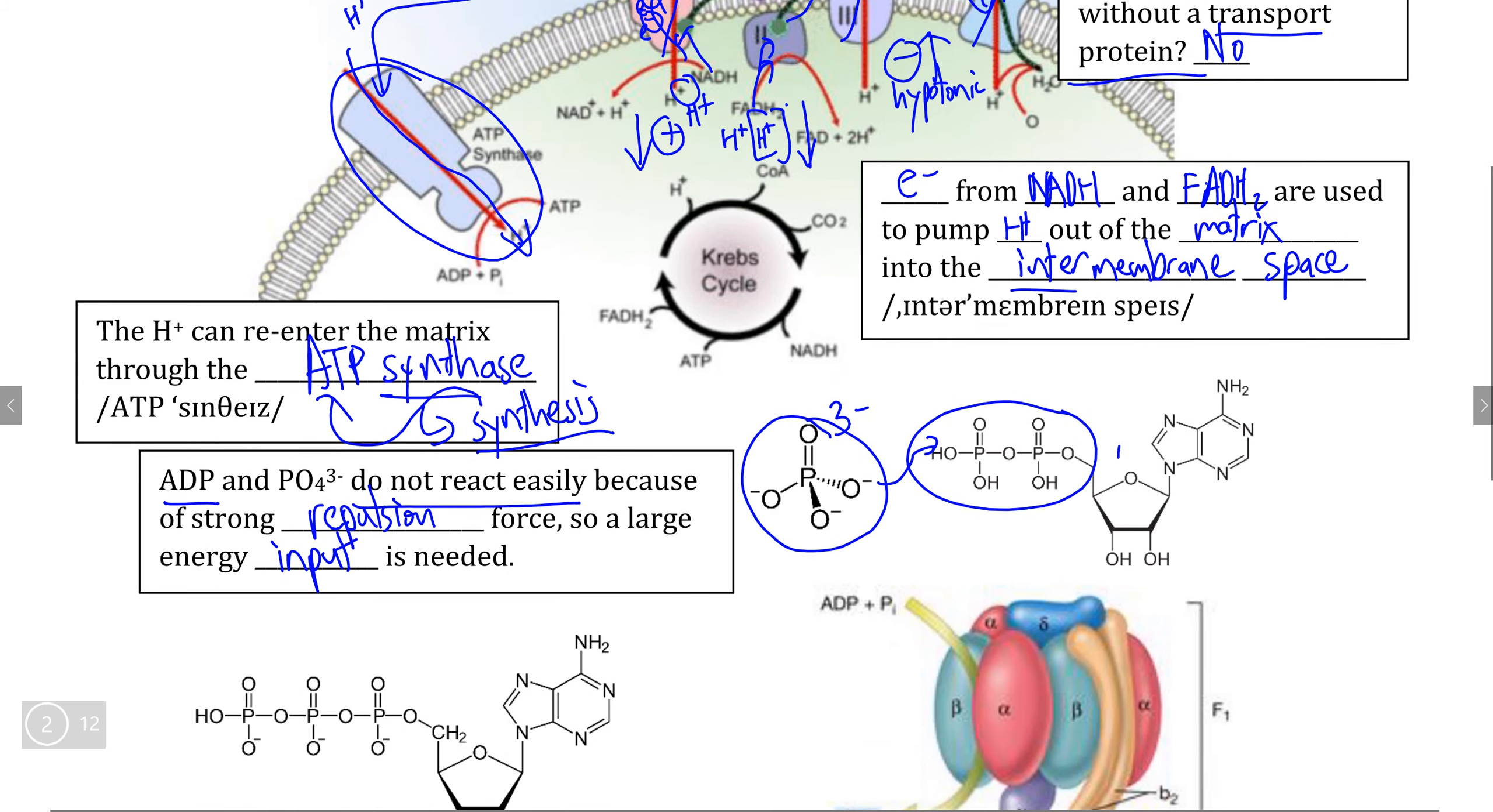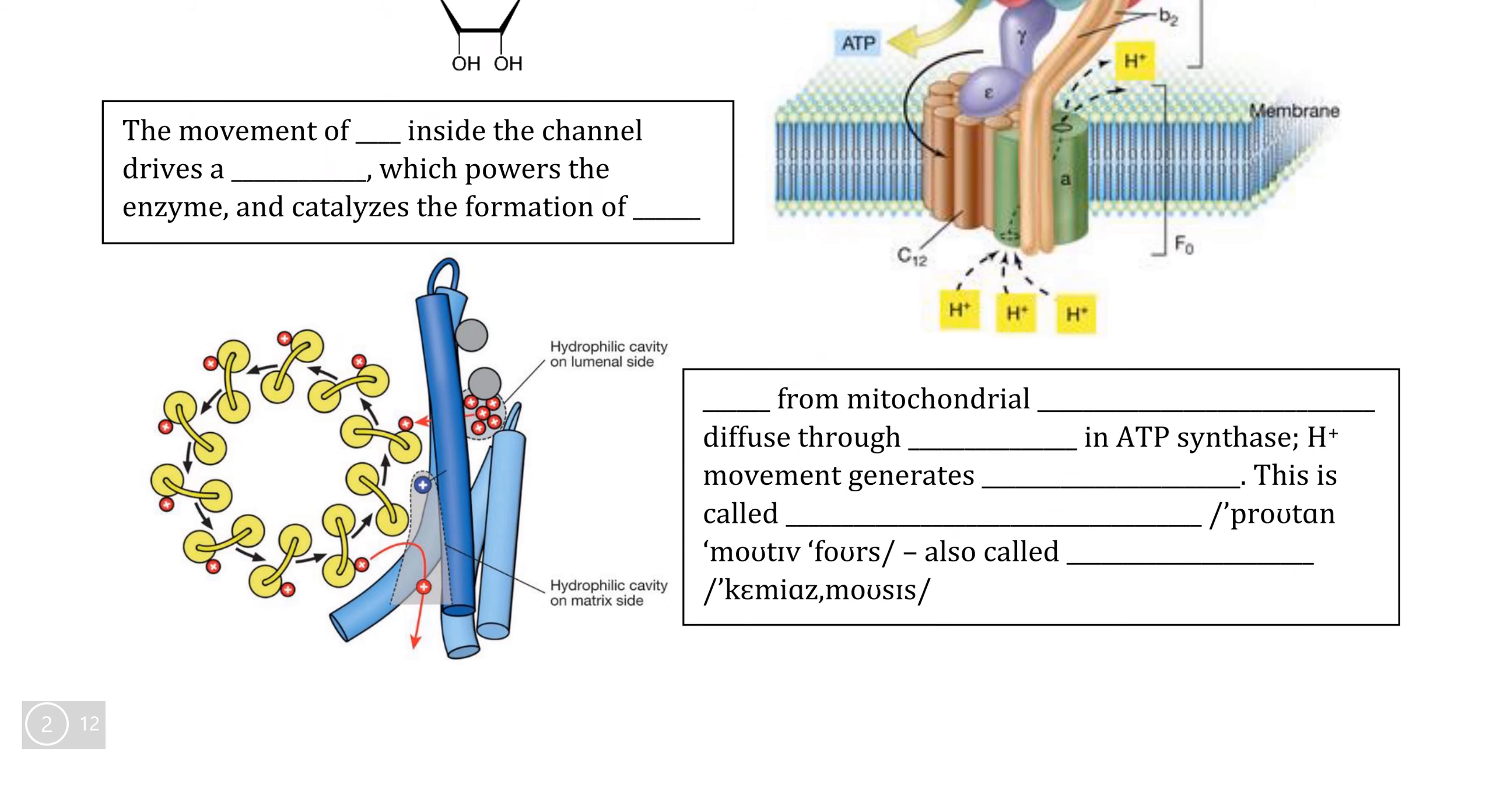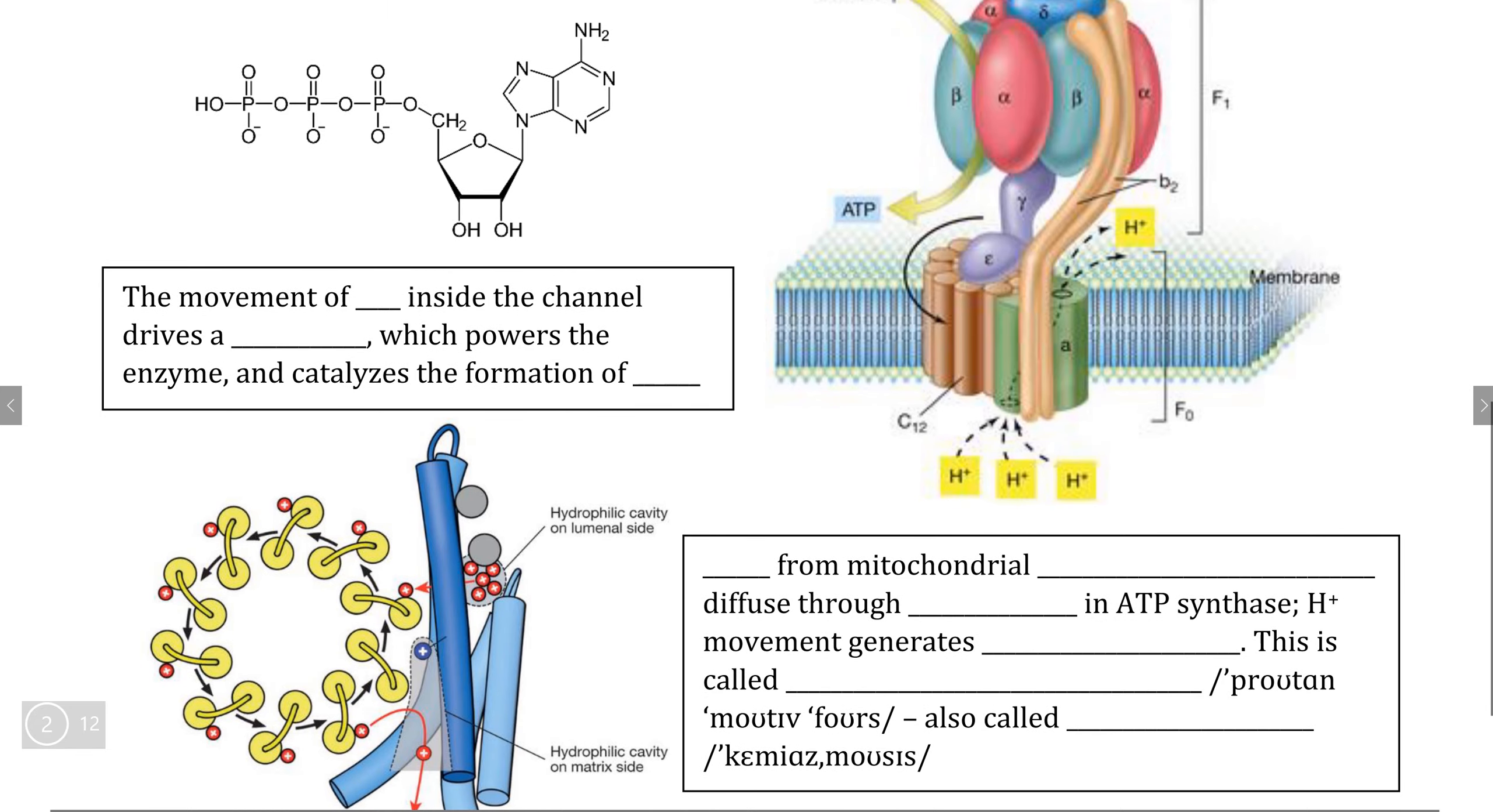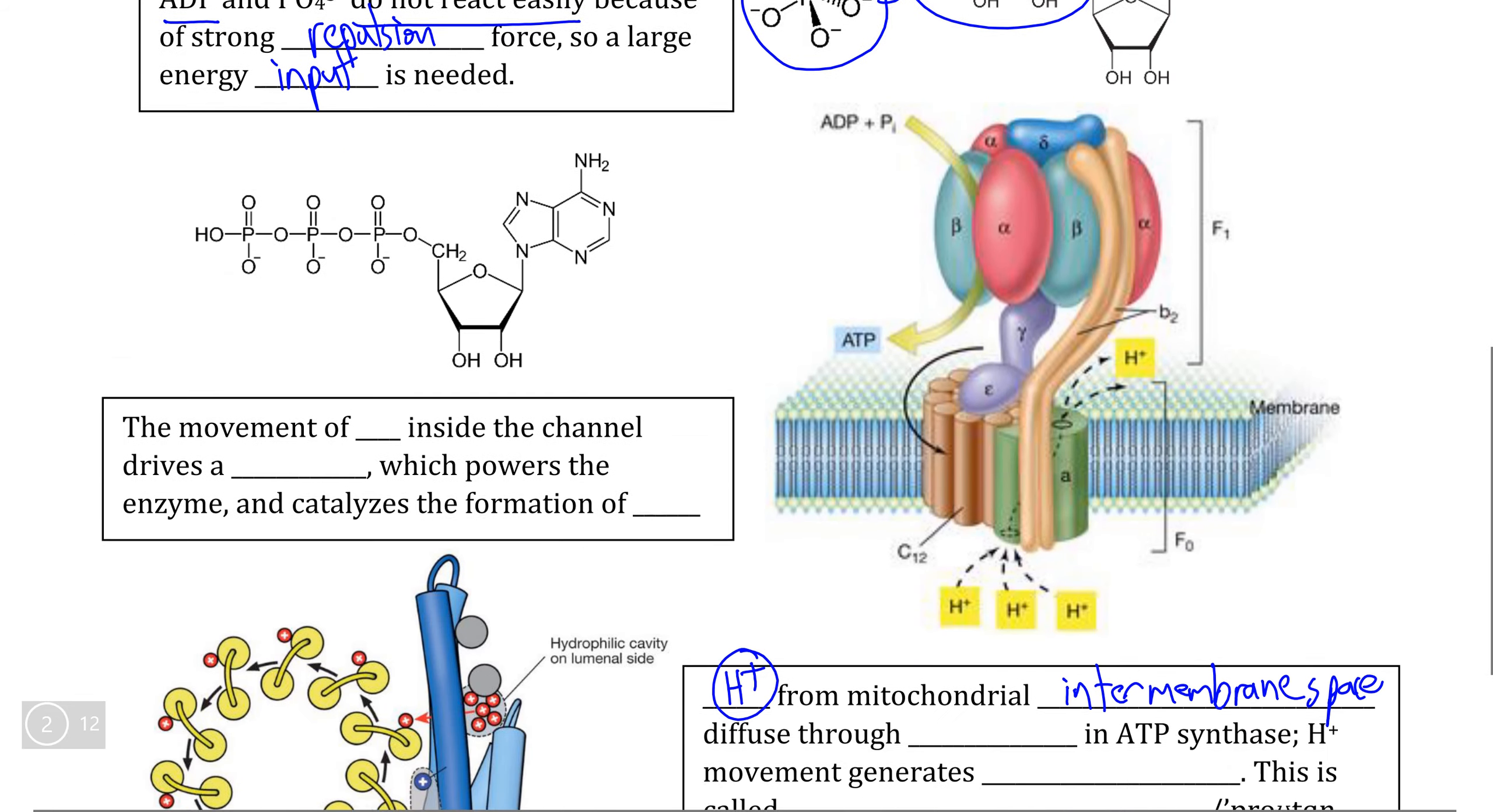But we cannot do that here. We do that using ATP synthase, which goes about this in a completely different way. The idea of the ATP synthase enzyme and channel protein is that it uses the movement of H plus from the mitochondrial intermembrane space, which naturally wants to diffuse back through the intermembrane space and back into the mitochondrial matrix because of the concentration and electrochemical gradients that we have created thus far.